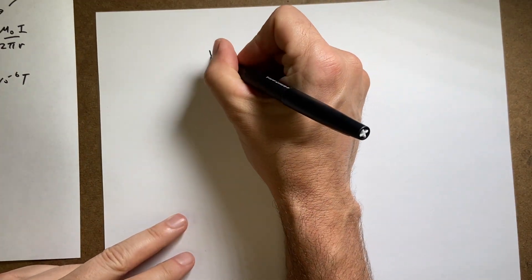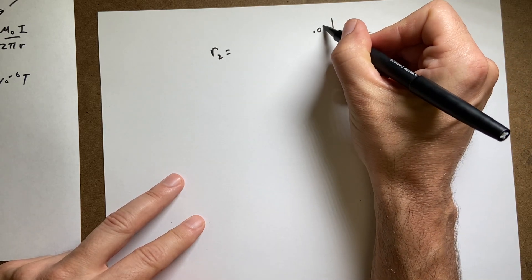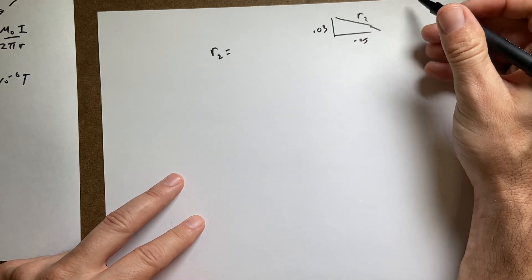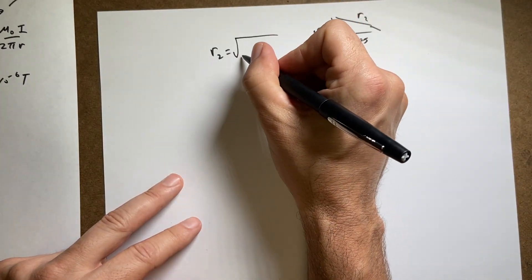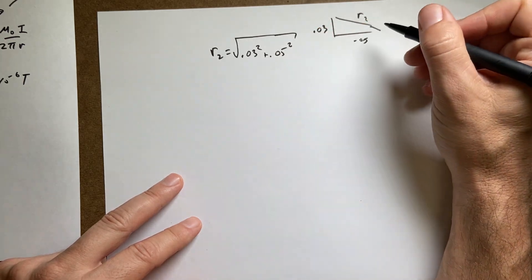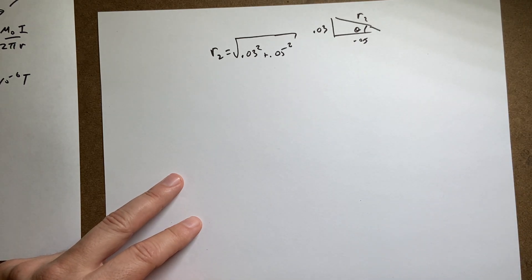r₂ is going to be equal to - if I draw this triangle, this is 0.03, 0.05, and that's r₂. It's a right triangle, so r₂ is going to be the square root of 0.03² + 0.05². I'm also going to need this angle θ.